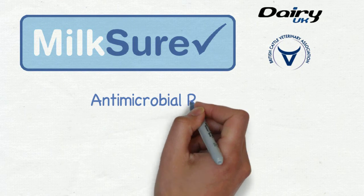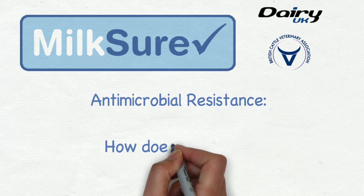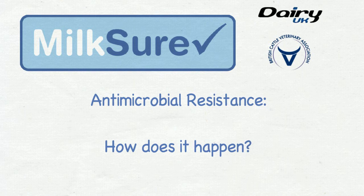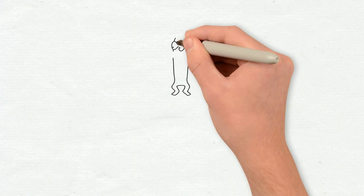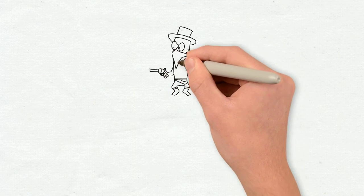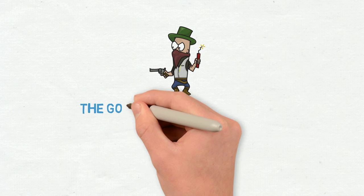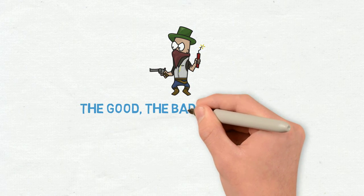In this video, we look at how antimicrobial resistance occurs in bacteria. It is a tale of the good, the bad and the ugly. Let's introduce the characters in the story.